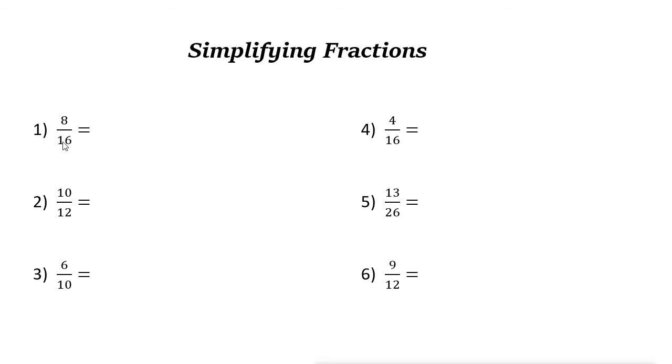Let's take a look at this example, 8 over 16. These two numbers are even numbers. We can divide even numbers by 2. 8 divided by 2 is 4. 16 divided by 2 is 8. 4 over 8 equals 8 over 16.